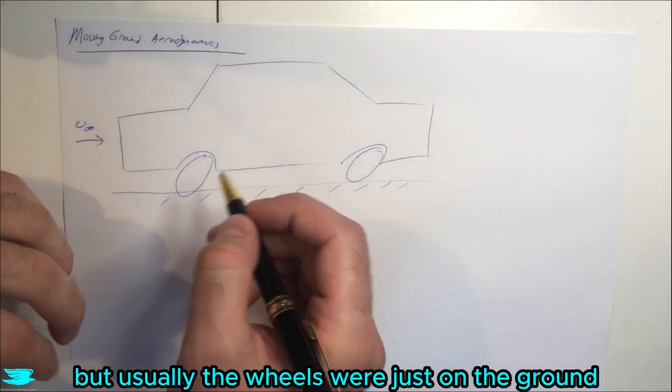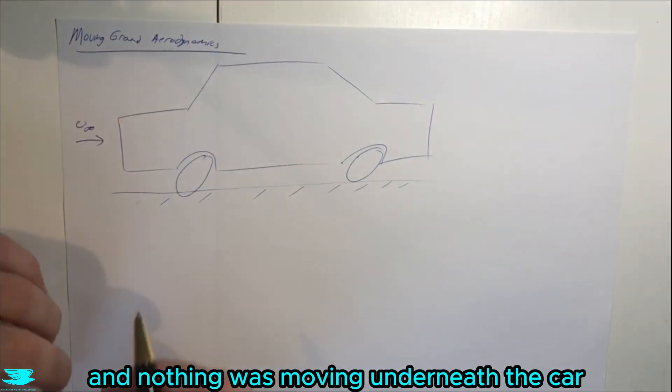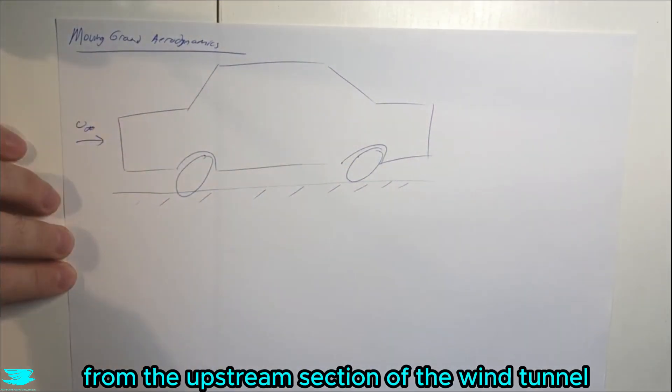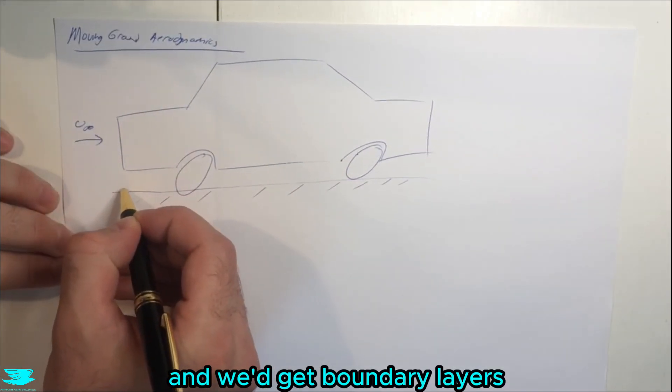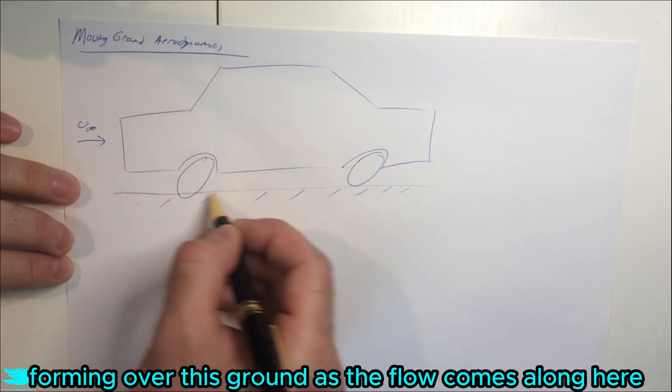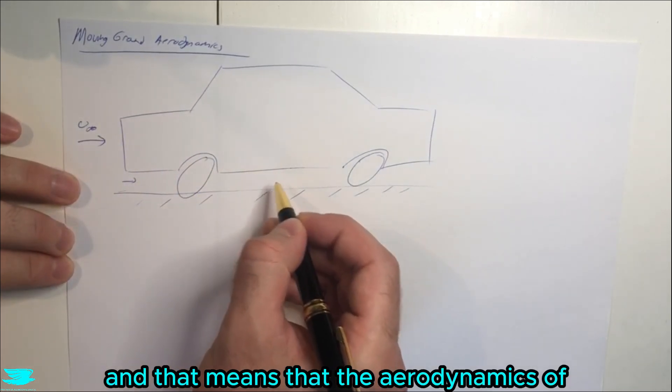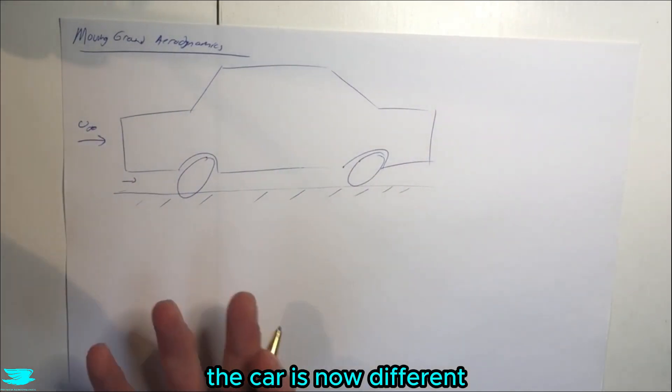Usually the wheels were just on the ground and nothing was moving underneath the car. The flow would come along from the upstream section of the wind tunnel, and we would get boundary layers forming over this ground. That means the aerodynamics of the car is now different.